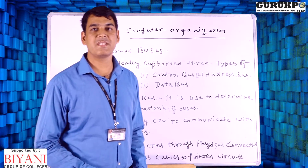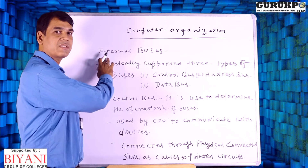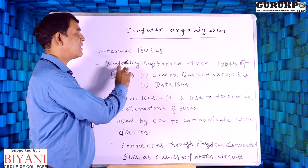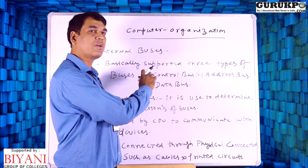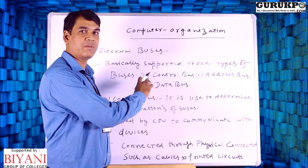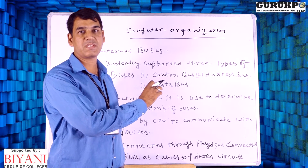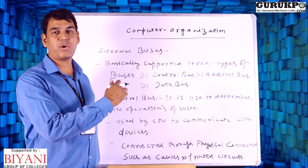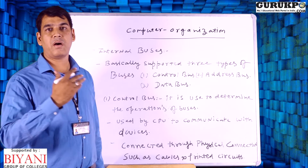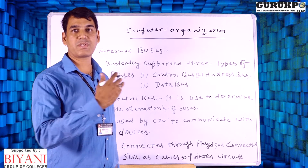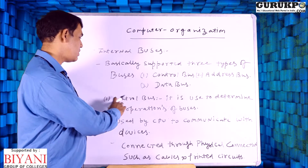As we discussed, the system bus has different components. First of all, let us discuss the internal bus. The control bus basically determines the operation of buses, carrying signals from one component to another component. When we want to transfer data from one component to another component, we use the control bus.